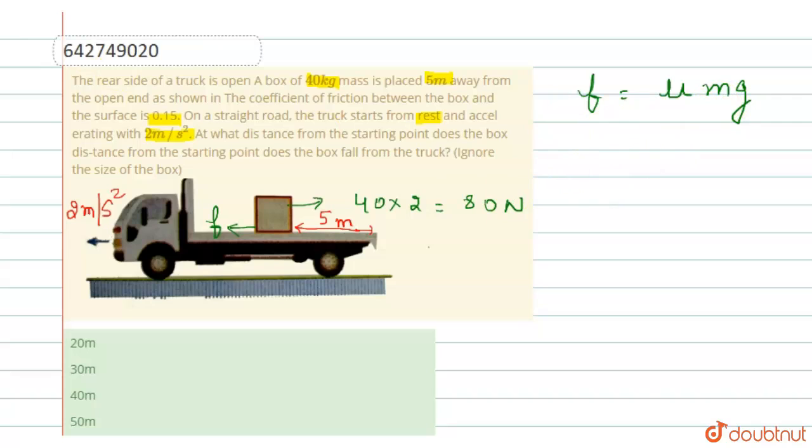Now we have to find the acceleration of the box with respect to the truck, which is a'. a' equals 80 minus μ times 400. μ times 400 is the frictional force. If we put the values of m and g, we get μ times 400 divided by 40.